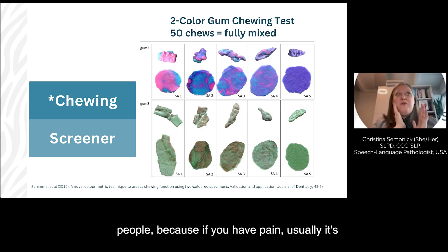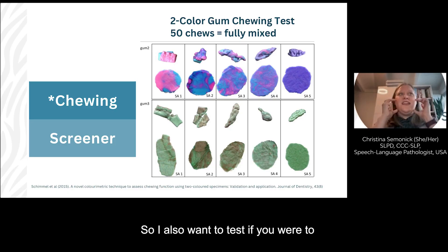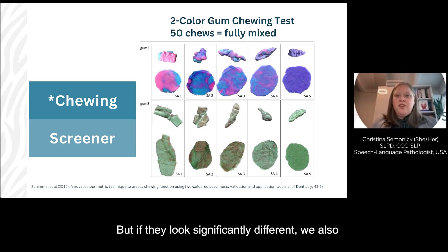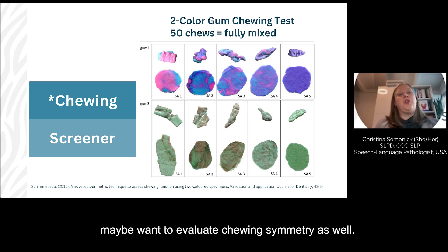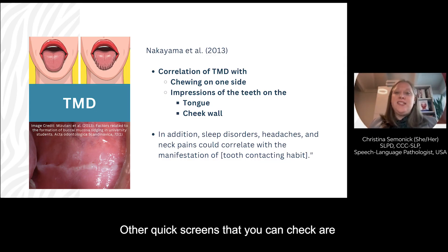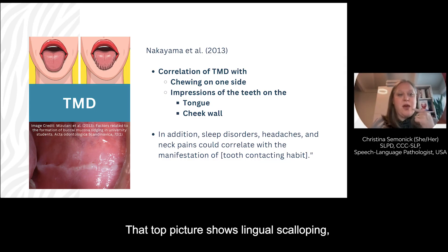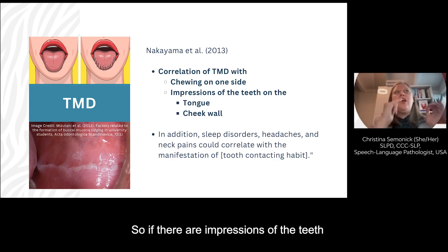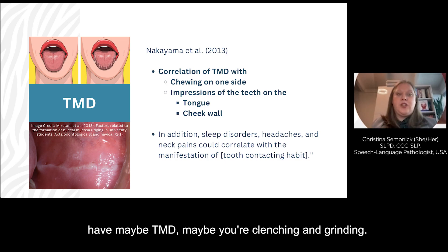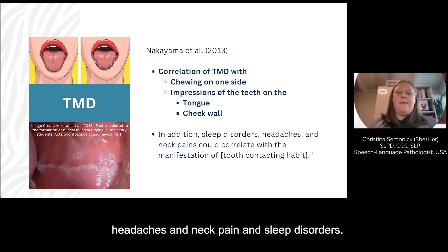In my patients, because if you have pain it's usually on one side more than the other, I also want to test chewing symmetry: take the same gum, chew it 20 times on the left, spit it out, then 20 times on the right, spit it out — if they look significantly different, we may want to evaluate chewing symmetry as well. This is consistent with general research on TMD, which shows that people often only chew on one side. Other quick screens include looking for impressions of the teeth on the tongue — lingual scalloping — and impressions of the teeth on the cheek wall, which suggest you may have TMD, clenching, and grinding. Those are related to things like headaches, neck pain, and sleep disorders.